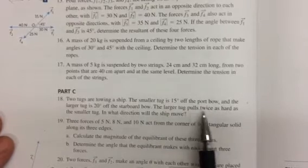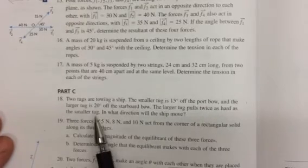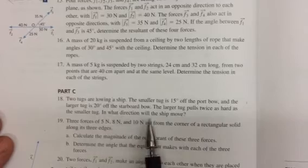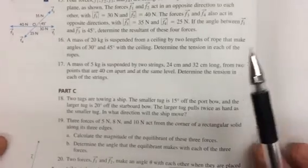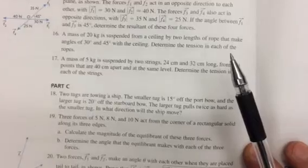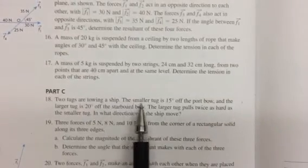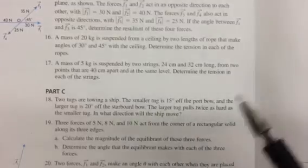The larger tug pulls twice as hard as the smaller tugboat. In what direction will the ship move? Okay, so we need to know what starboard and port are and bow. So bow is the front of the boat.